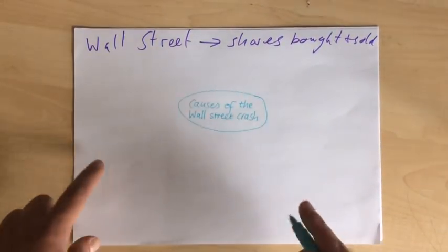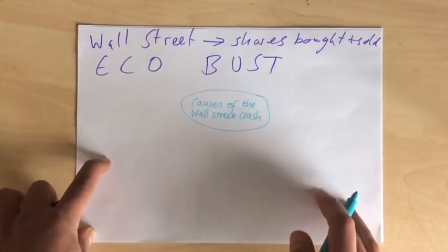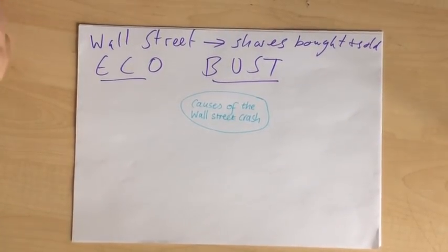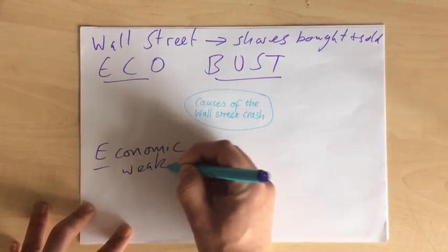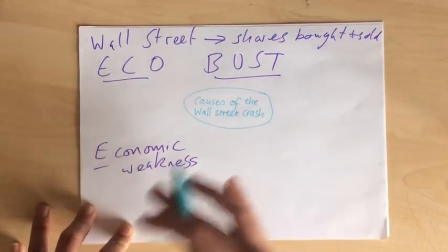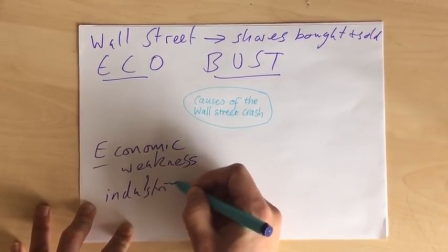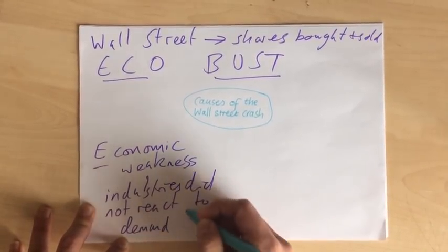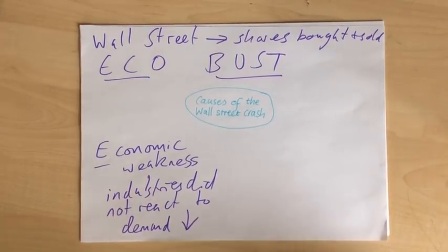In your revision guide, you've got a way to remember the causes of the Wall Street Crash — that is ECOBUST, because the US economy went bust. So the E stands for Economic Weakness. What economic weakness means is simply that the big industries in America did not react to demand becoming lower. So when people were buying less cars or fridges or toasters, the companies did not react properly — they did not have a proper strategy and so they carried on to lose money.